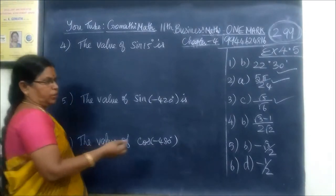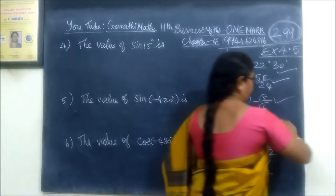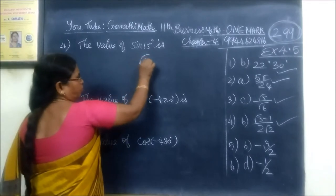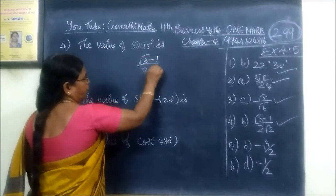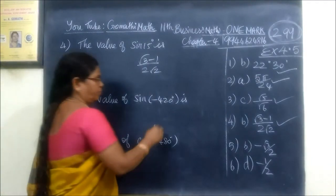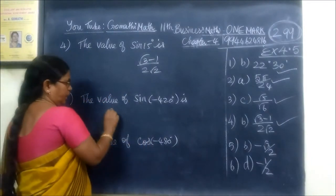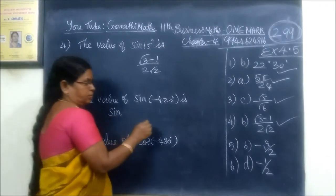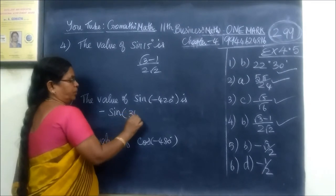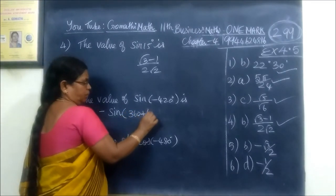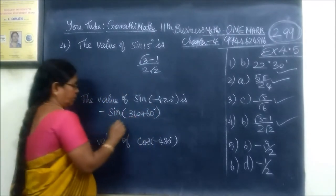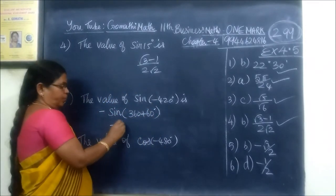Then we get that one equal to 3. So for the next, let us call the sin 15 degrees. So root 3 minus 1 by 2 root 2. This is the value of sin of minus 420. Sin of minus theta minus cos, sorry, minus sin theta.